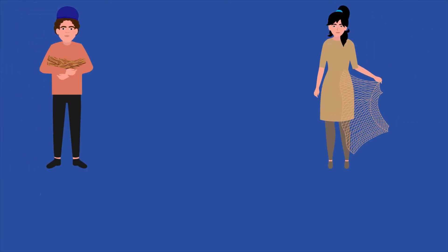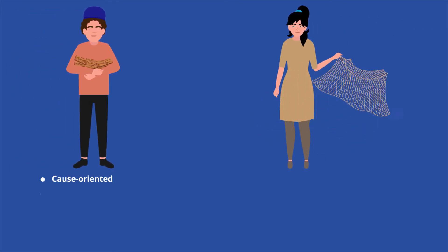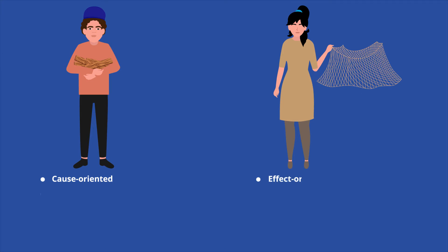Both approaches tackle the problem, but from different perspectives. Adir's suggestion would strike directly at the cause, while Gil's plan focuses on the effects. Since they're dealing with different parts of the problem, they'll have different consequences.